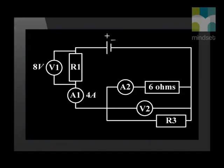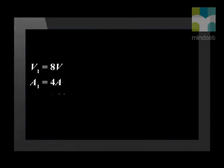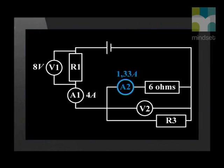Now that we have learned how to apply Ohm's law to solving problems in a series circuit, let's look at a parallel circuit. When we follow the circuit from the positive terminal of the cell to the negative terminal, we see a resistor in series with a voltmeter across it, then an ammeter. After this, the circuit splits with two resistors in parallel with a voltmeter across them, and an ammeter in one branch. We are given that V1 reads 8 volts, A1 reads 4 amperes, and A2 reads 1.33 amperes. Fill that extra information in on the diagram so that we don't forget we can use it.